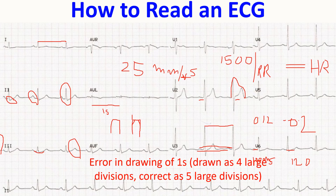For the QT interval, a simple way to remember is 0.34 to 0.43 seconds. However, the QT interval is variable — it changes with heart rate, differs between males and females, and also varies with age. So you cannot apply a single fixed value for the QT interval.